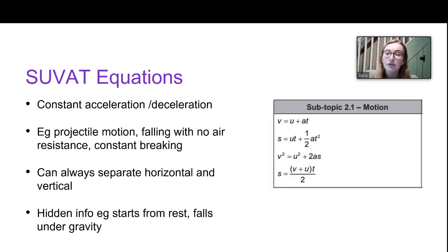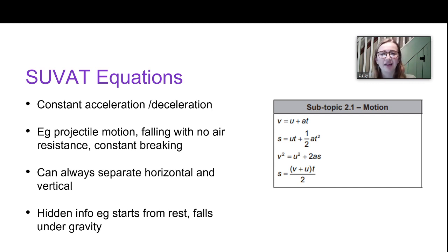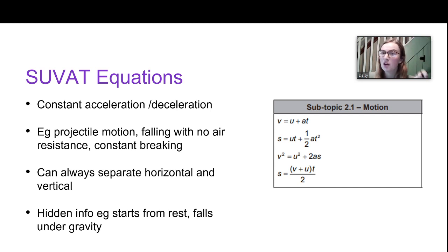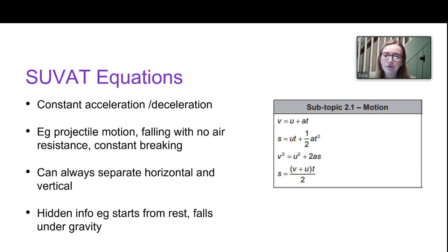The next approach is the SUVAT equations. SUVAT equations can be used when you have constant acceleration or deceleration — if acceleration is non-constant, you can't use them. Key examples where acceleration is constant: an object falling under gravity with no air resistance, projectile motion with no air resistance, or an object with no friction but some constant braking force. Constant force implies constant acceleration, so you can probably use SUVAT.